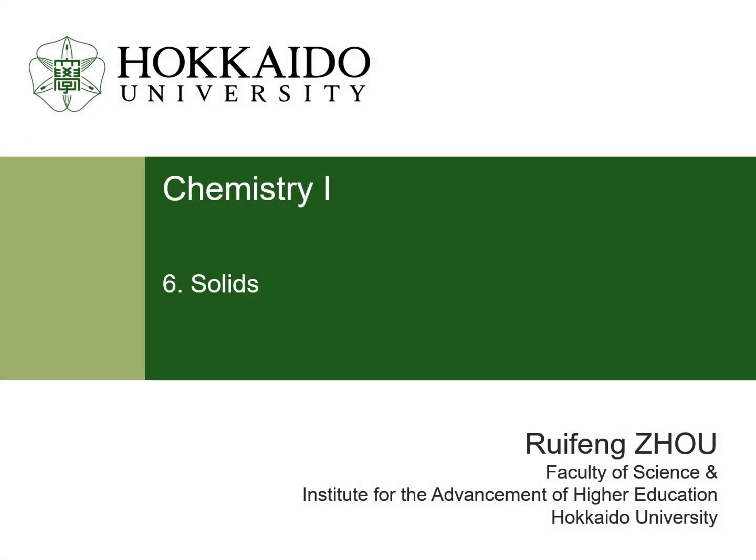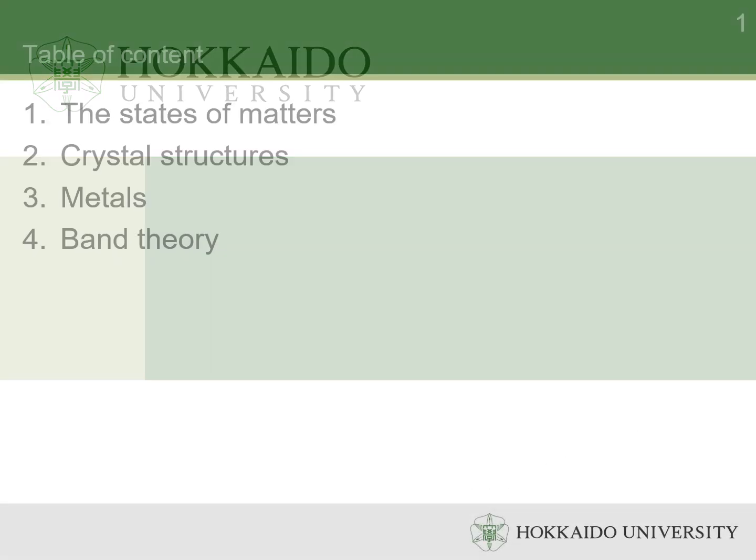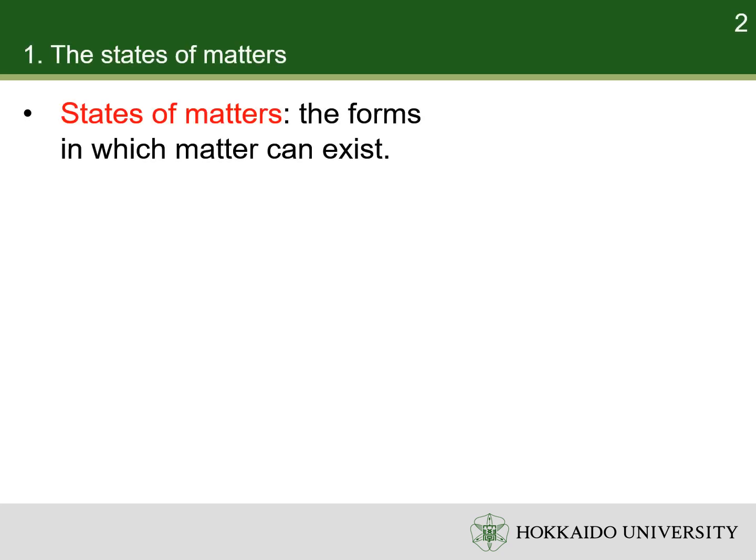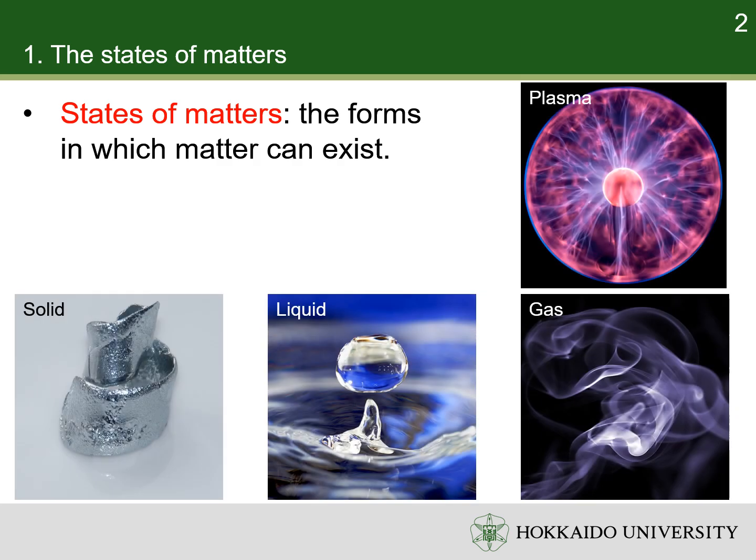In this chapter, let's discuss the properties of solids. A state of matter is one of the distinct forms in which matter can exist. Four states of matter are observable in everyday life: solid, liquid, gas, and plasma.